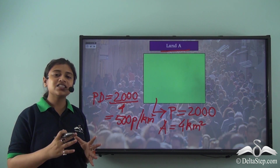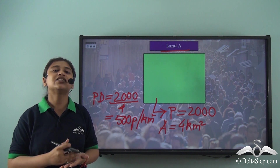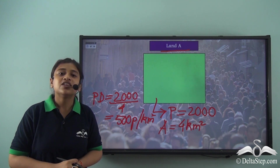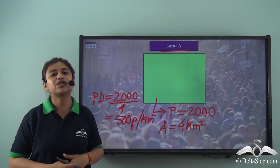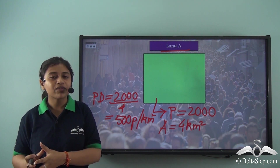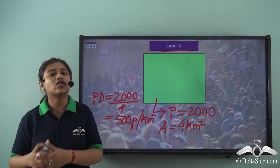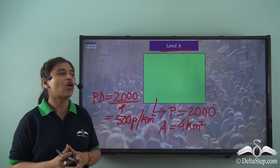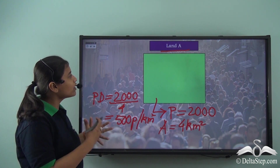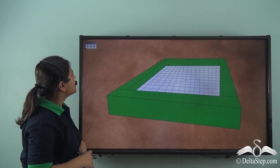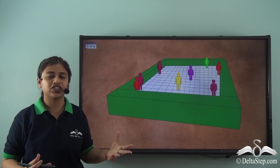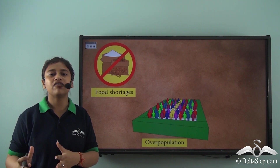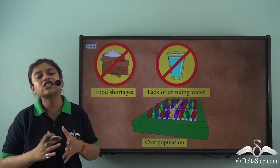Once the capacity to hold a certain number of people has been exceeded, it also means that the resources initially available to people there have now become limited. So we see that there is an inverse relationship between the population density of an area and the resources present in that area. There is an immense pressure of population on Land A and its resources. Such a situation is known as overpopulation — where the available resources are not enough for the population density of that particular area.